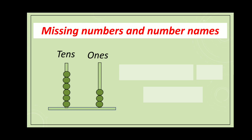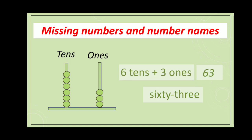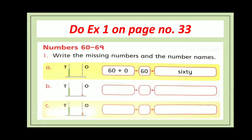Missing numbers and number names. Here is an abacus having beads on tens and ones. Let's count the beads on ones: one, two, three — three ones. Let's count the beads on tens: one, two, three, four, five, six — six tens. So six tens plus three ones makes the number 63. And the number name is sixty-three — S-I-X-T-Y-T-H-R-E-E.